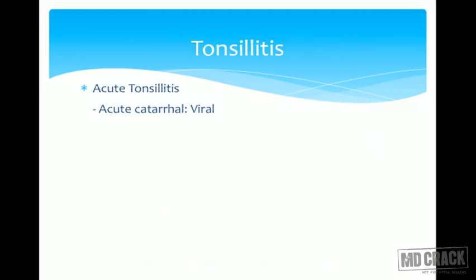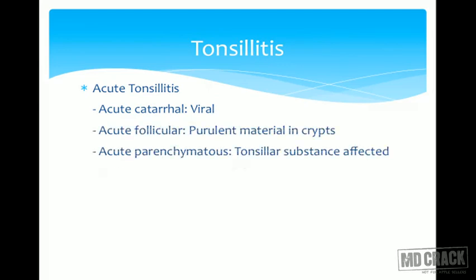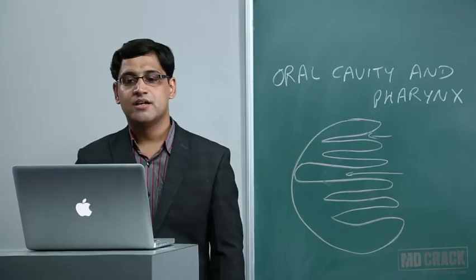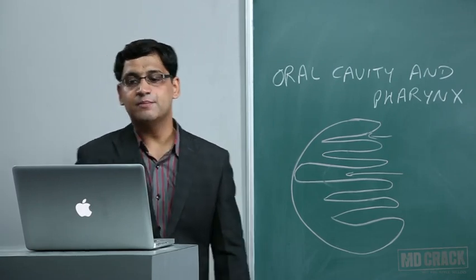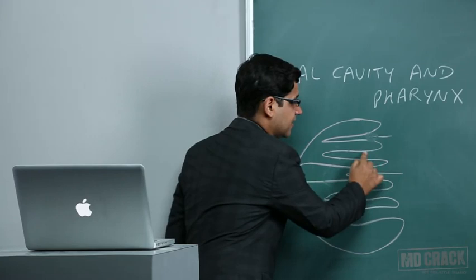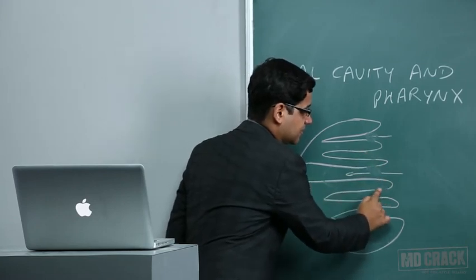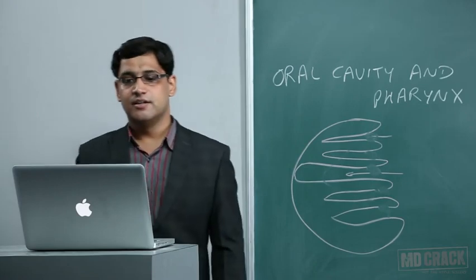Tonsillitis is the inflammation of tonsillar tissue. Acute tonsillitis is divided into four types: acute catarrhal or viral — in viral infection not only the tonsil but also the pharynx is involved, giving tonsillopharyngitis. Acute follicular tonsillitis has purulent material in the crypts. When these purulent materials combine, they form a membrane — known as acute membranous tonsillitis. When the whole substance of the tonsil is involved, it is acute parenchymatous tonsillitis.